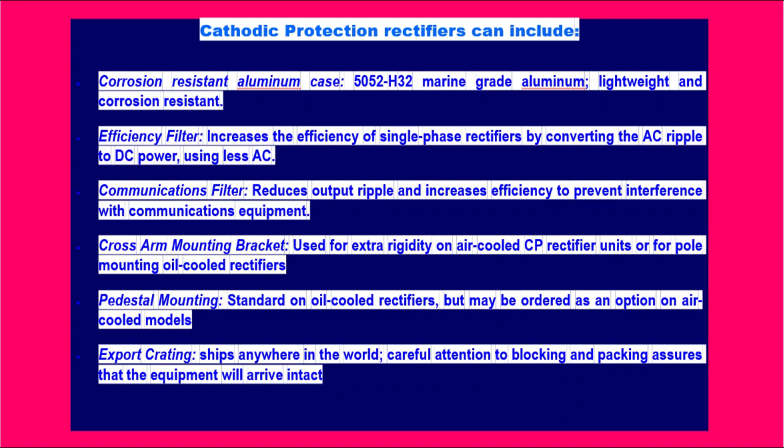Cathodic Protection Rectifiers can include the following features: 1. Corrosion Resistant Aluminum Case 5052H32, Moraine Grade Aluminum, lightweight and corrosion resistant. 2. Efficiency Filter — increases the efficiency of single-phase rectifiers by converting AC ripple to DC power using less alternating current. 3. Communications Filter — reduces output ripple and increases efficiency to prevent interference with communications equipment.